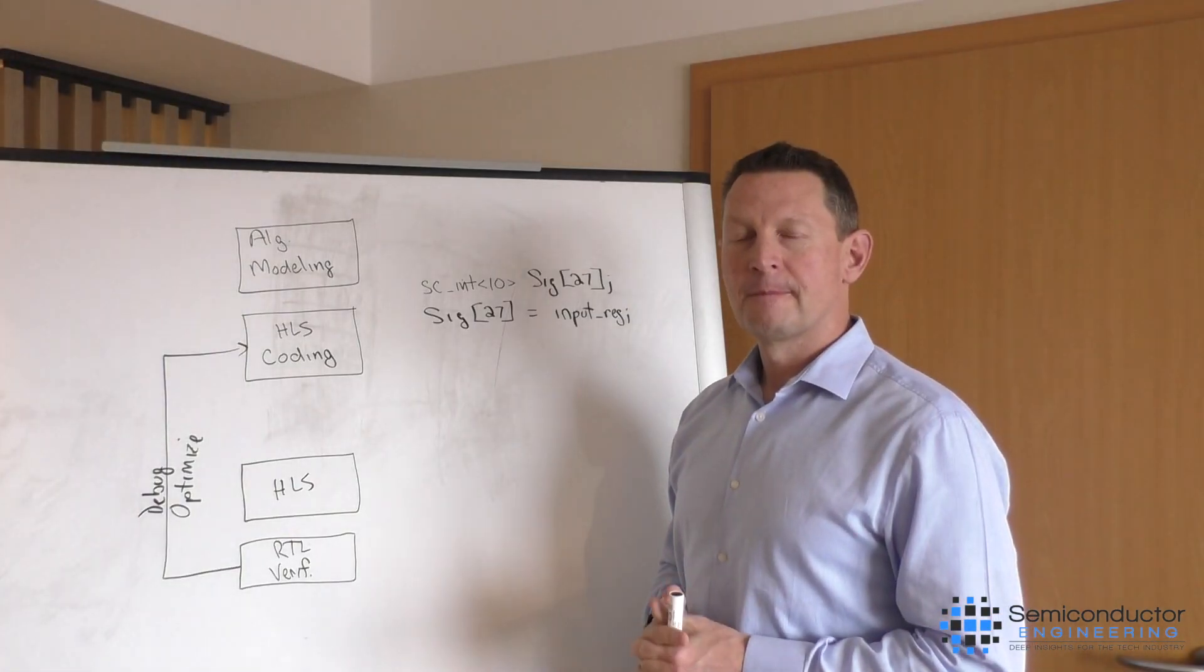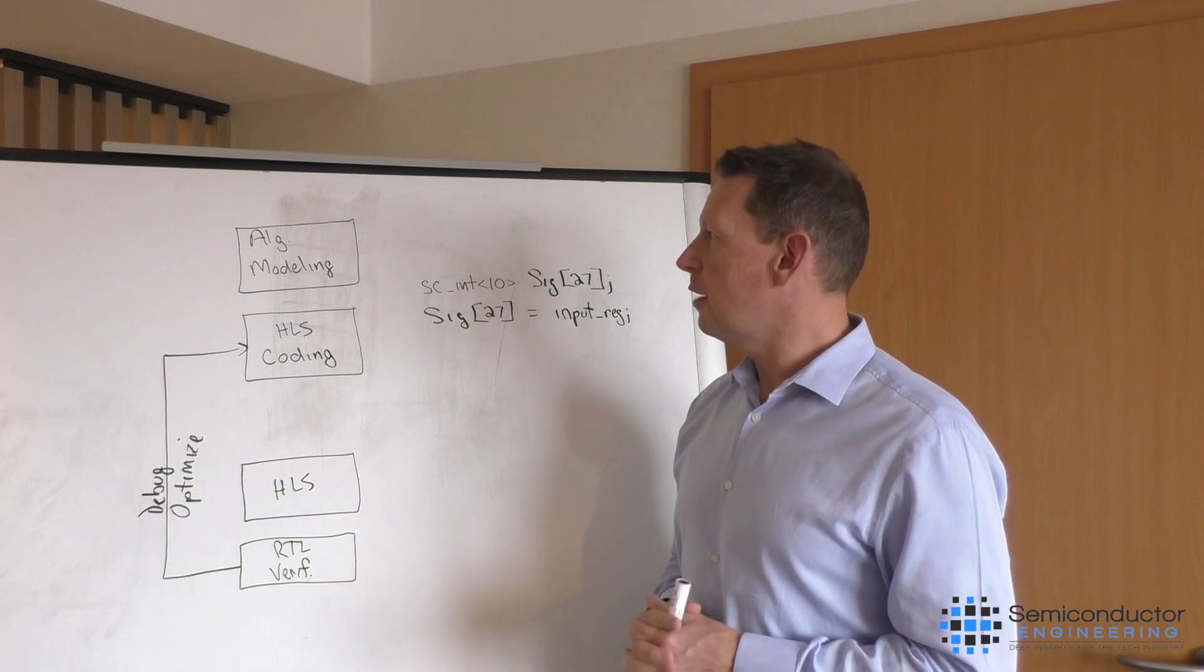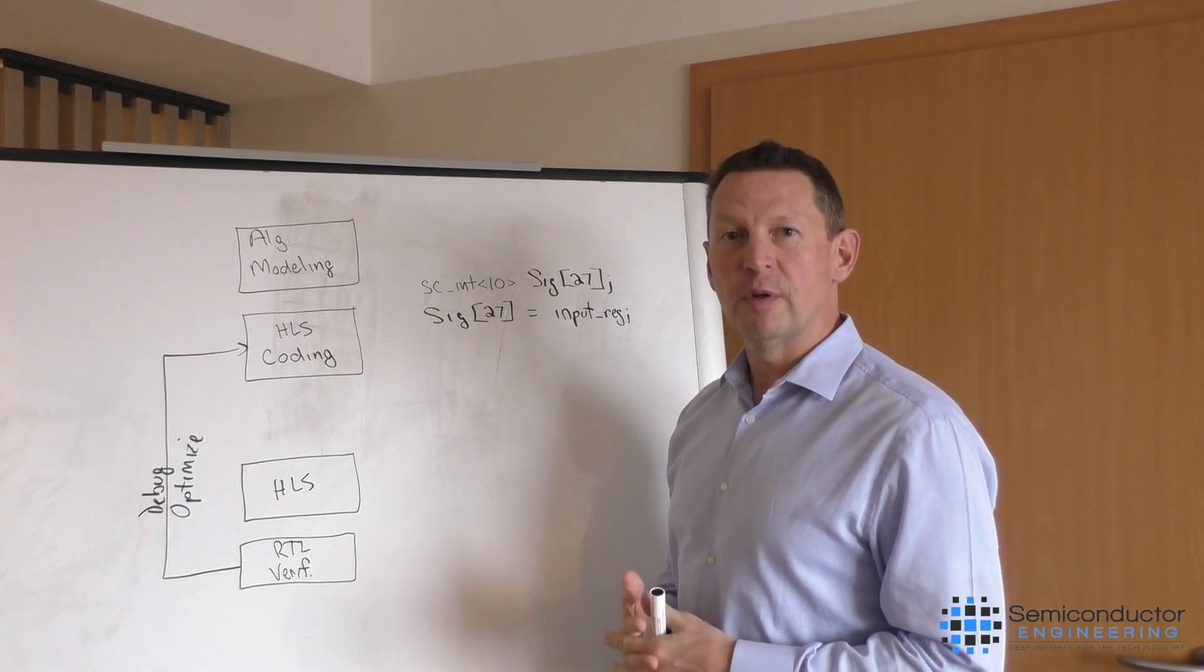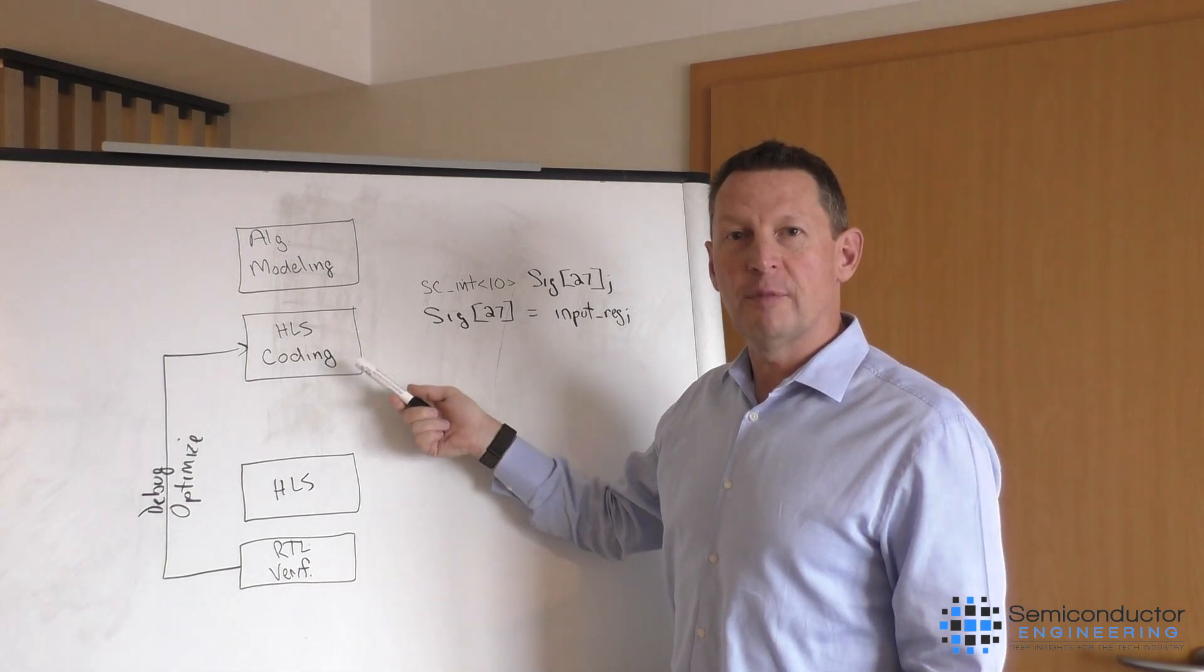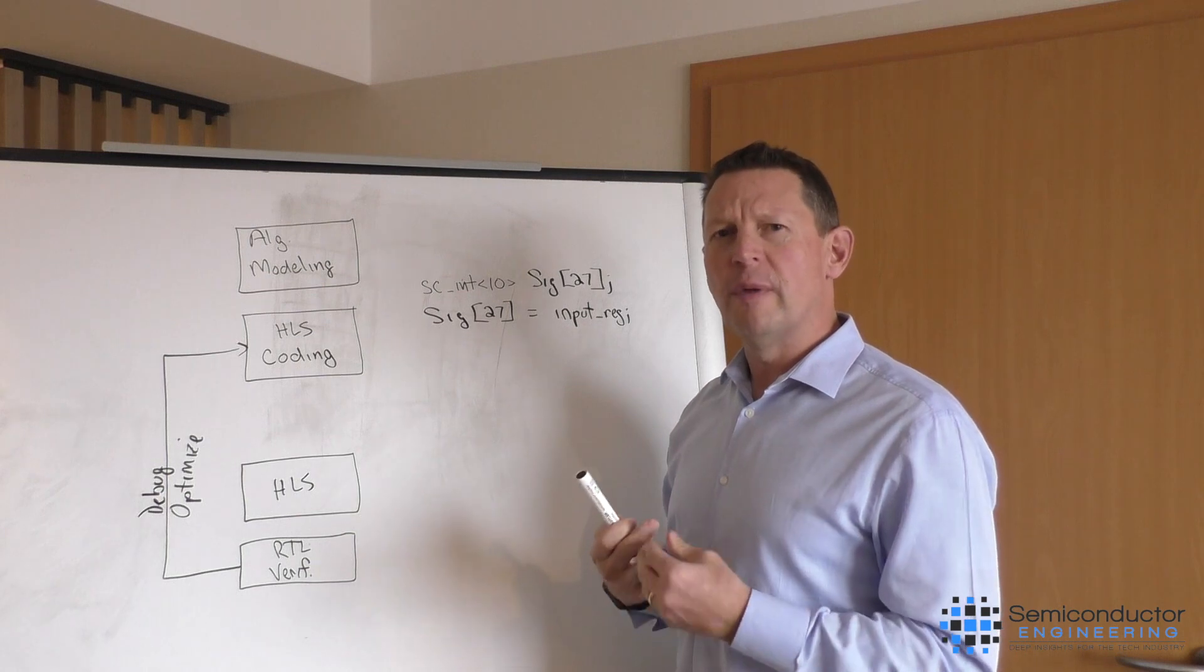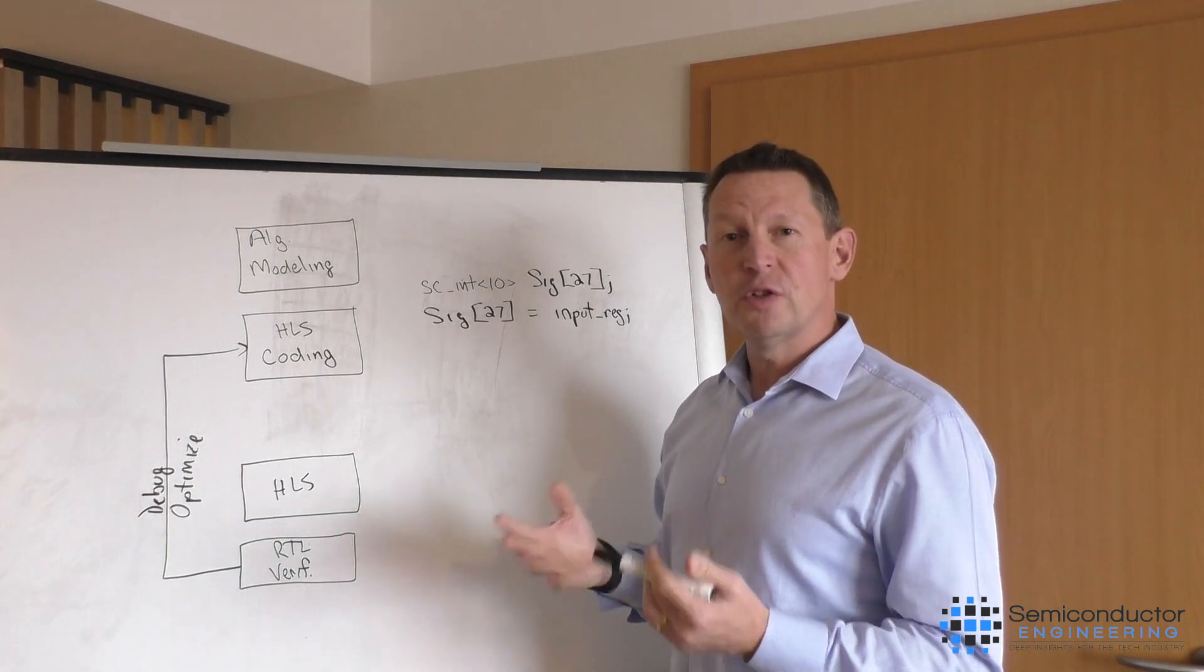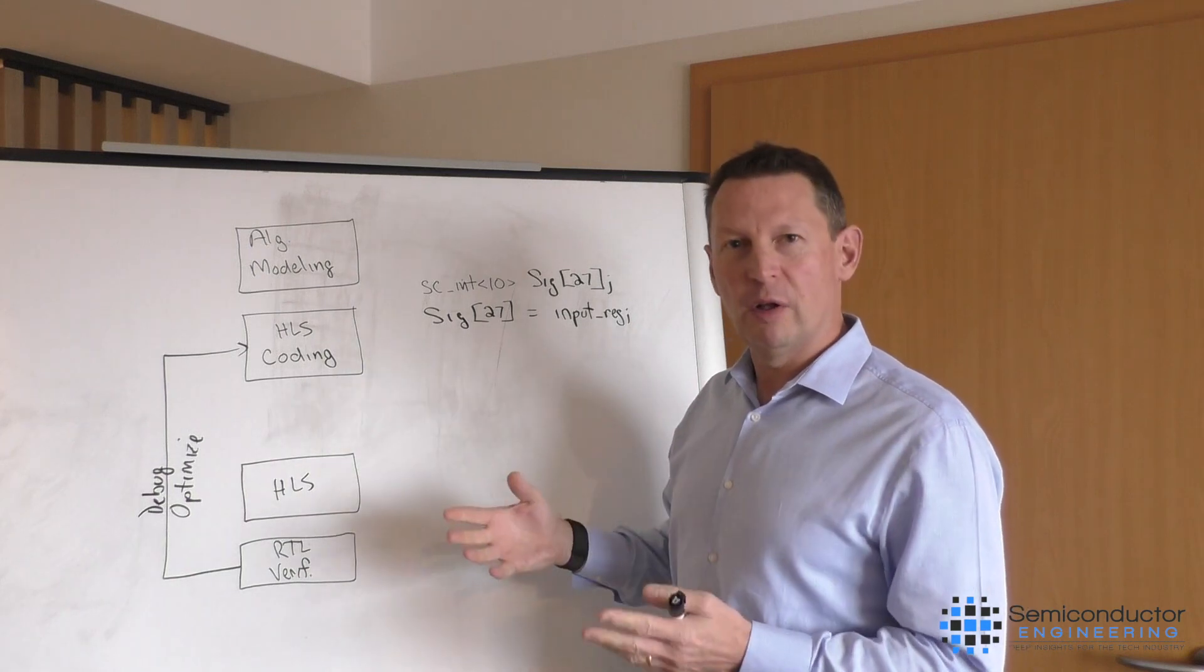So why don't you draw this out for us? Here we're looking at the typical high level synthesis flow. It starts off with an algorithmic model that needs to be refined into a high level synthesis model. During that phase, you code your design up to be hardware, and you'll eliminate things like memory allocation or unusual things that don't make sense in hardware. You'll size your data, and you'll make everything appropriate for hardware design with parallelism and so on.